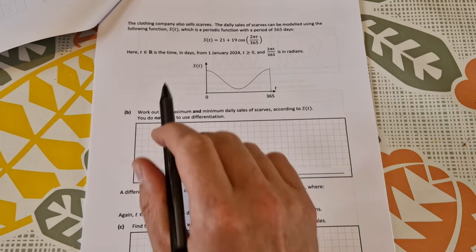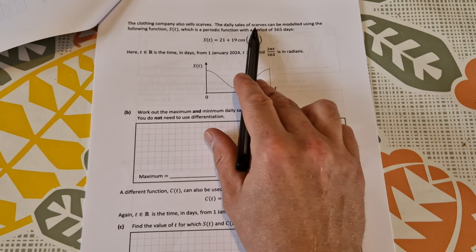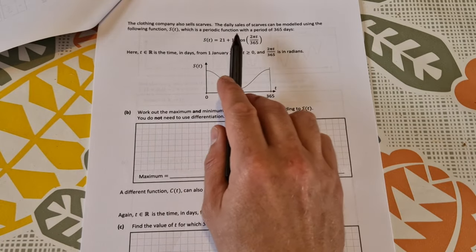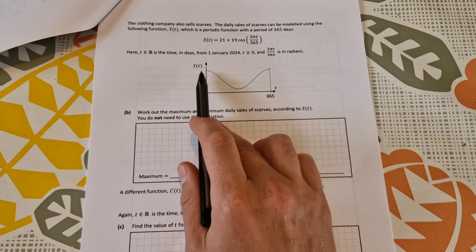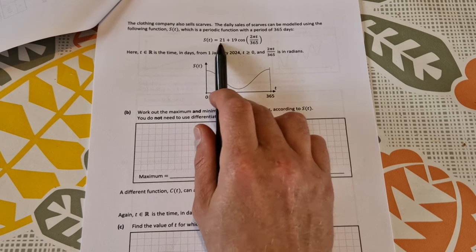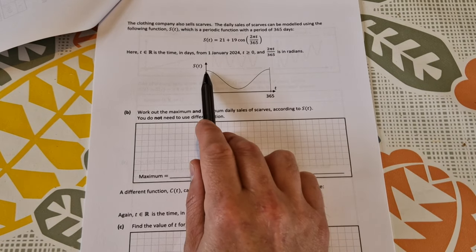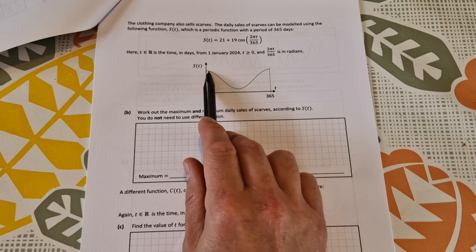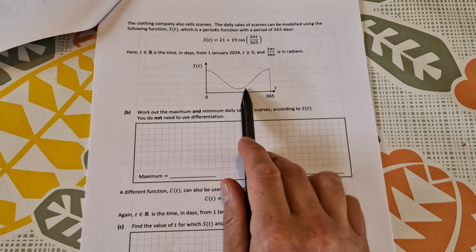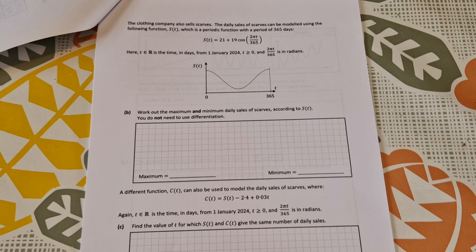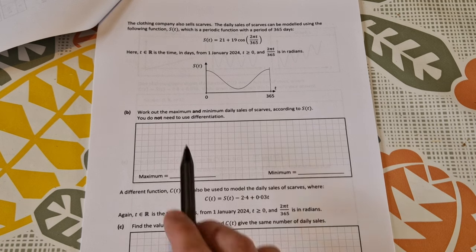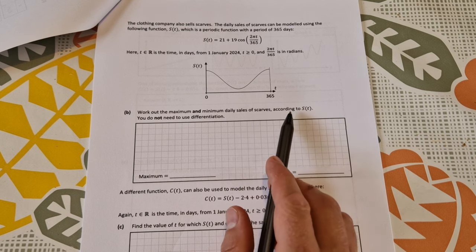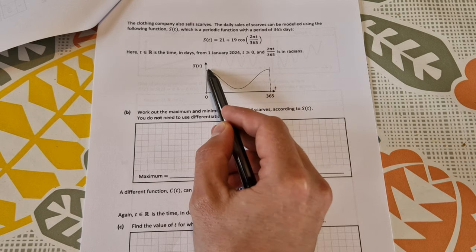The clothing company also sells scarves. The daily sales of scarves can be modeled using the following function s(t), which is a periodic function with a period of 365 days. So this is over the course of a year. You can see there's the function, it's a cosine function. After zero days, in January, they're selling quite a few scarves, then obviously in summer they're not selling many, and as it comes back into winter they sell more. Work out the maximum and minimum daily sales of scarves according to s(t).